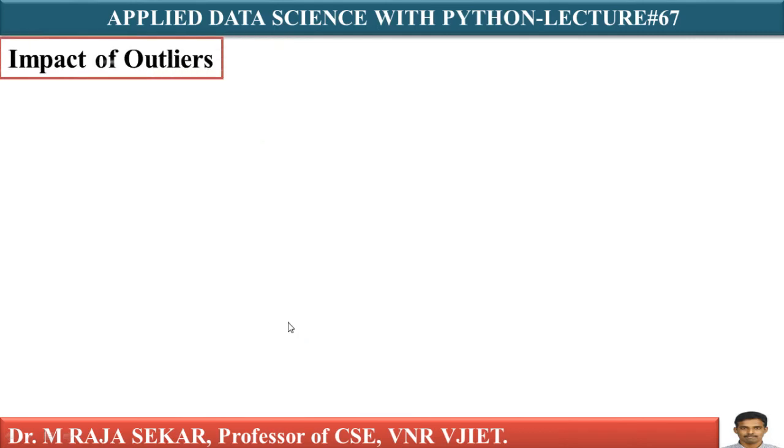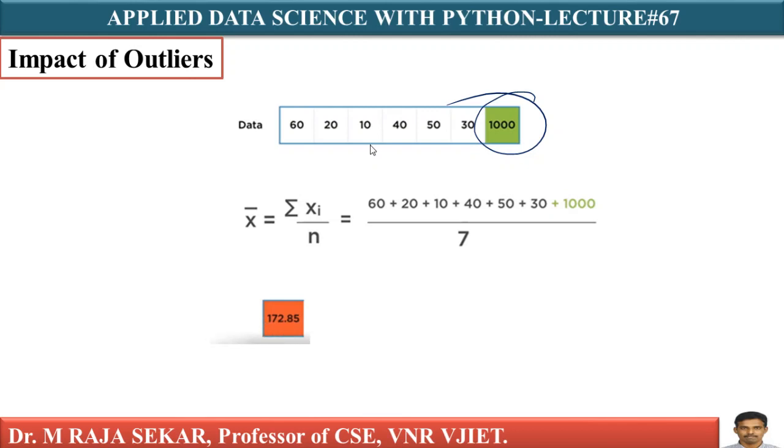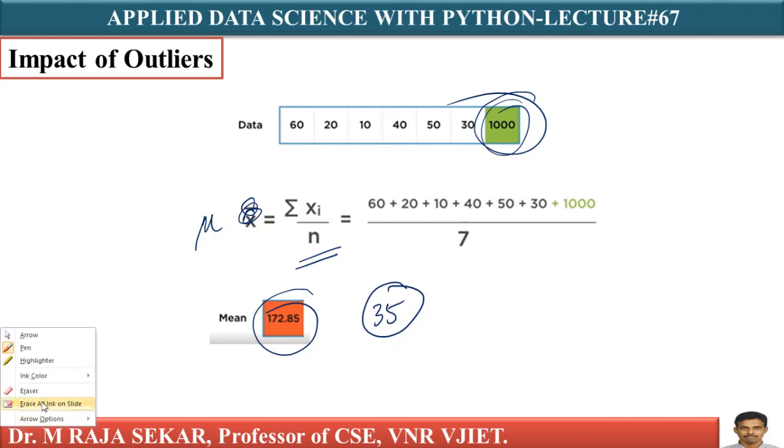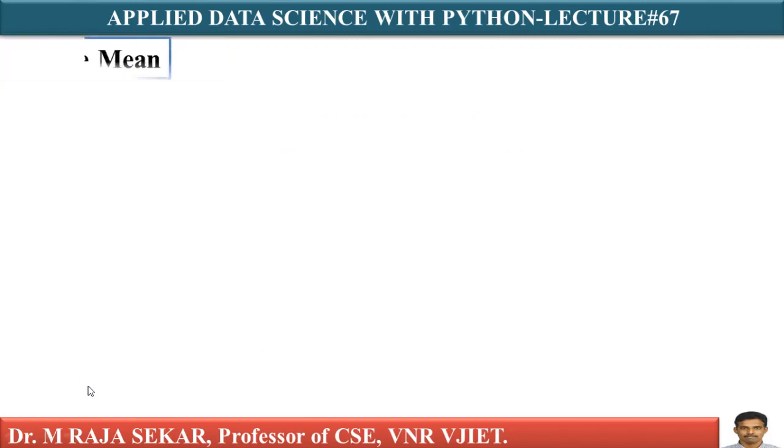Let me take impact of outliers. The same data set which we are using, but here I am taking this 1000 as an outlier. If you calculate arithmetic mean again, you are getting 172.85, whereas in previous case you are getting 35. Therefore, your population mean or average is affected by this outlier. Because previous population mean is 35, now you are getting 172.85 by introducing an outlier. It is simple and straightforward.